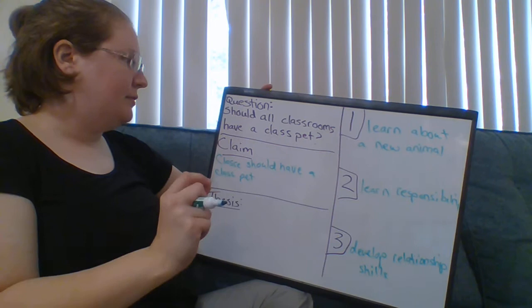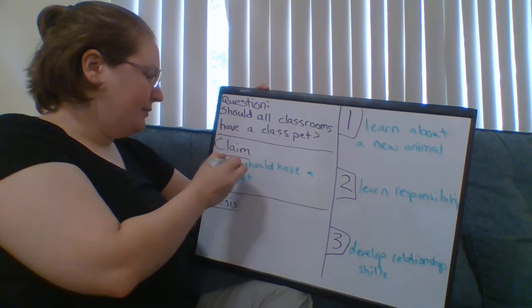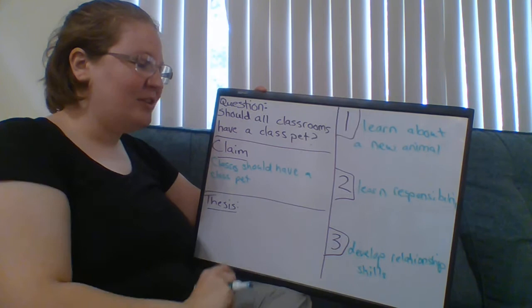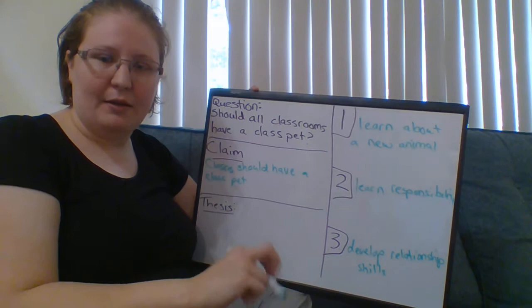Think about it like this. So to make a strong thesis statement, we can write: classes should have a class pet because you can learn about a new animal, learn responsibilities, and you can develop relationship skills. Period. That's a thesis statement.